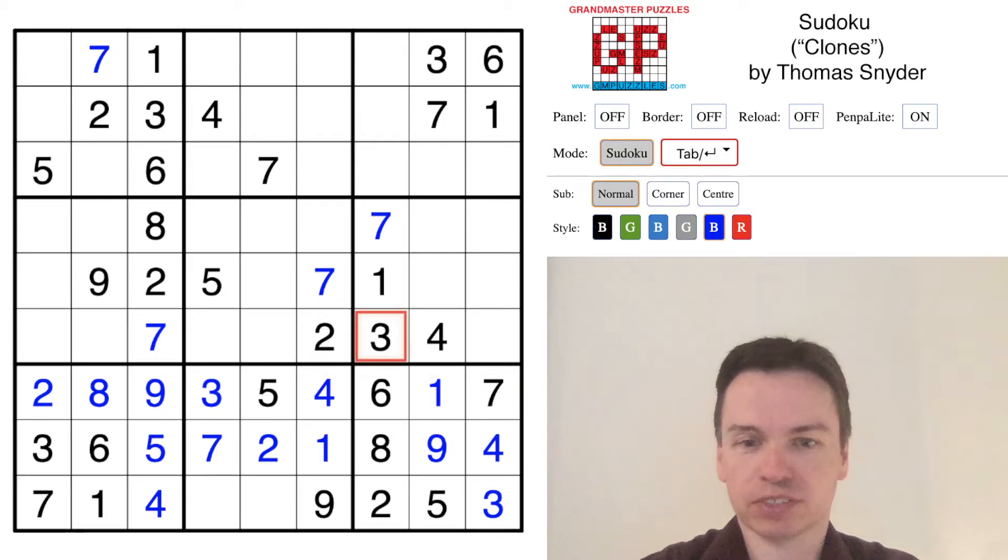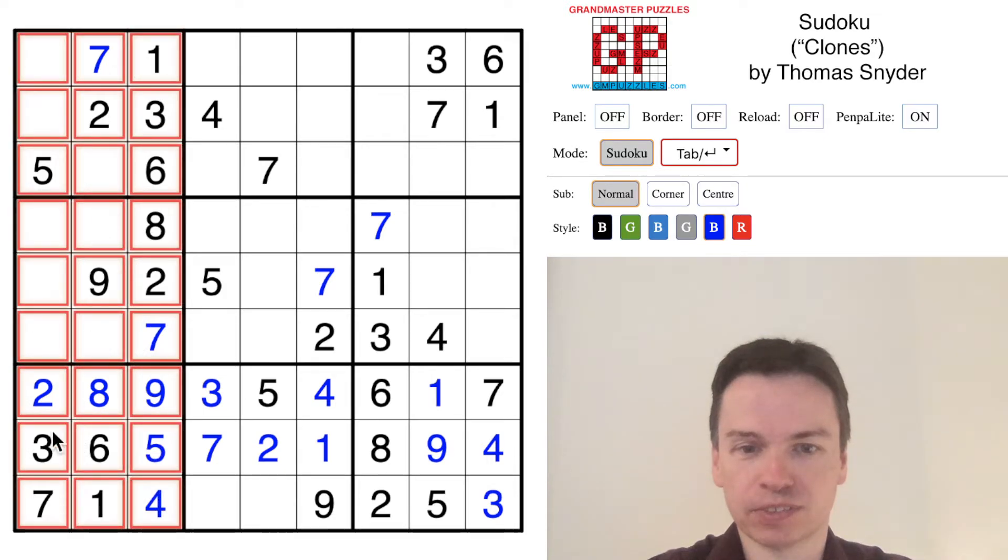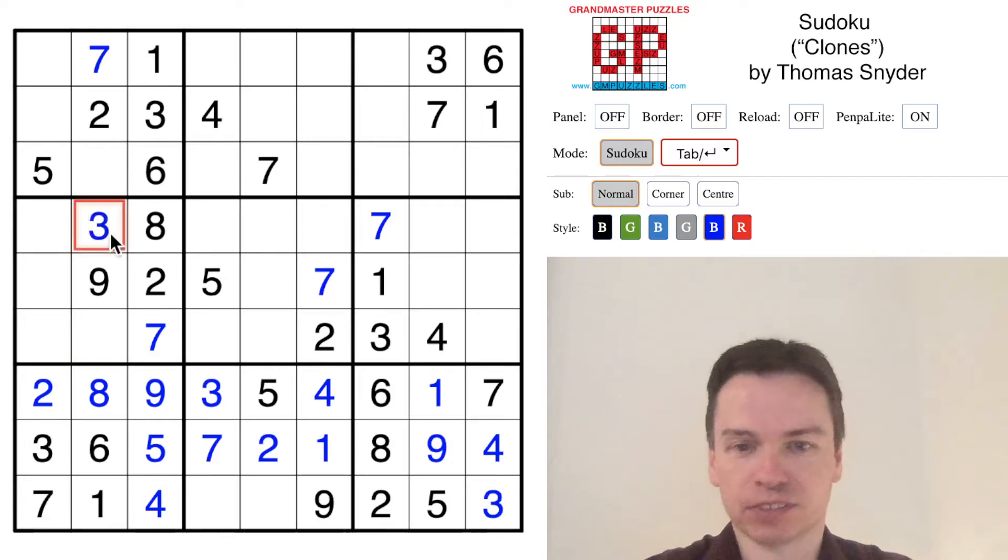Let's focus now on the digit three, which we've placed a few of, and at the start of the puzzle, if we'd actually looked in these columns, we would see that there are two threes, and the last three has to go here, which puts a three then in the center, puts a three here, that completes the threes.